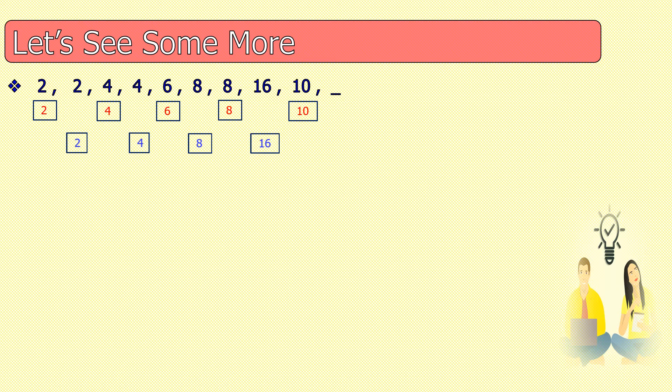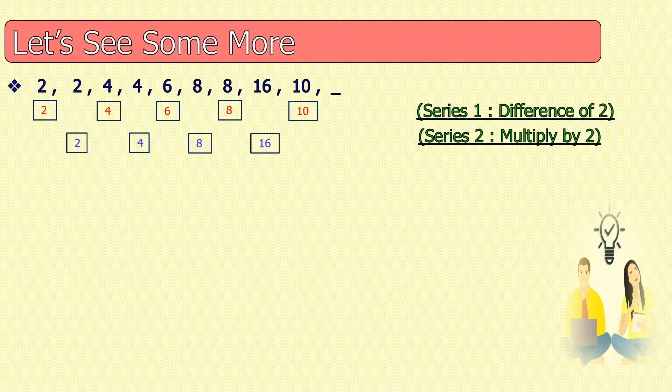In the blue series, the relationship is multiplication by 2: 2×2=4, 4×2=8, 8×2=16, and 16×2=32. This is the answer.